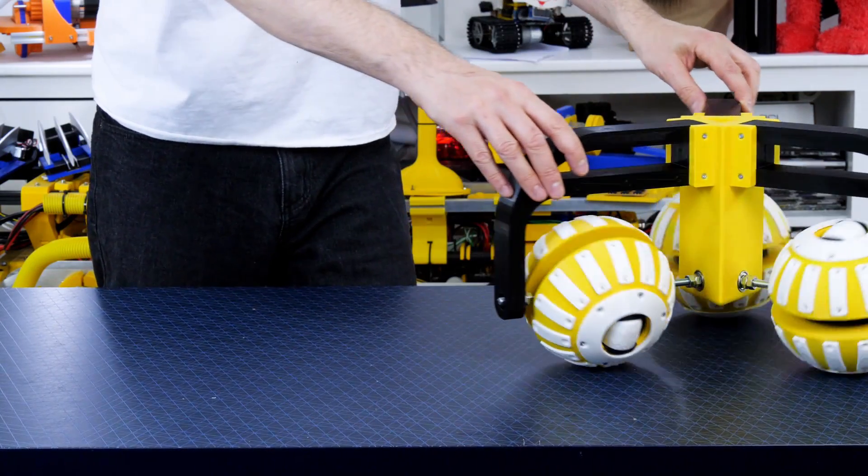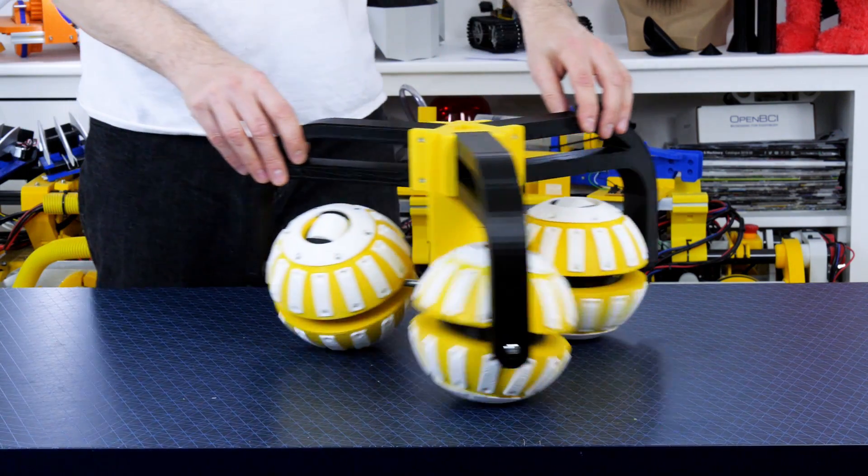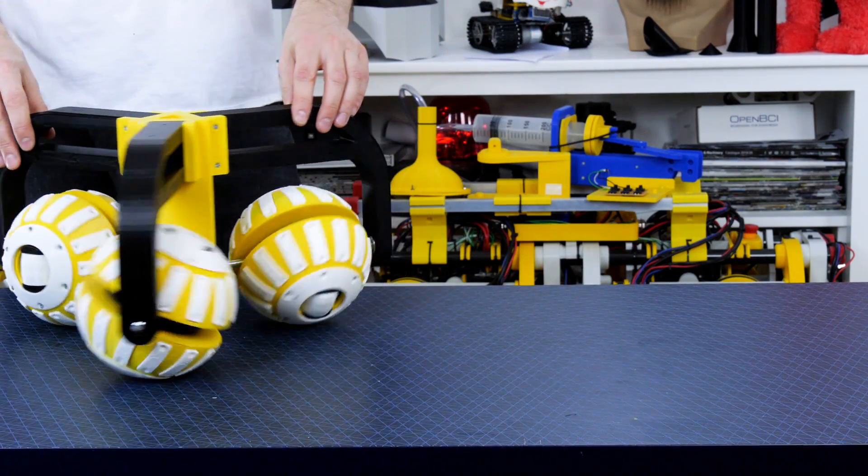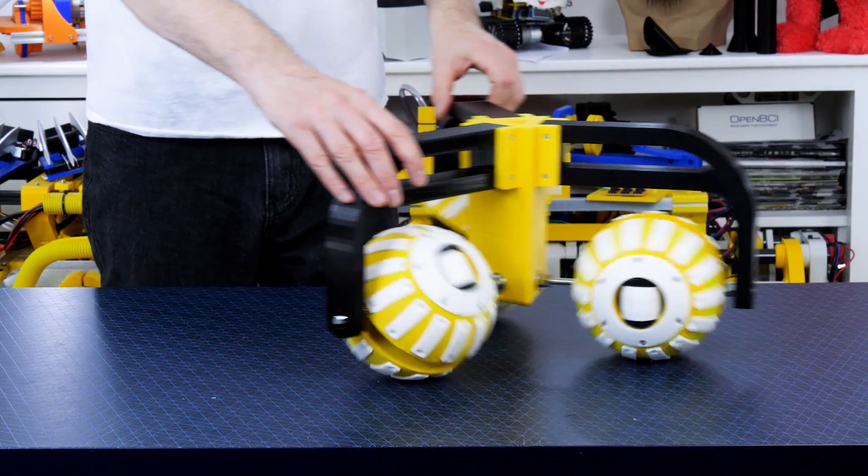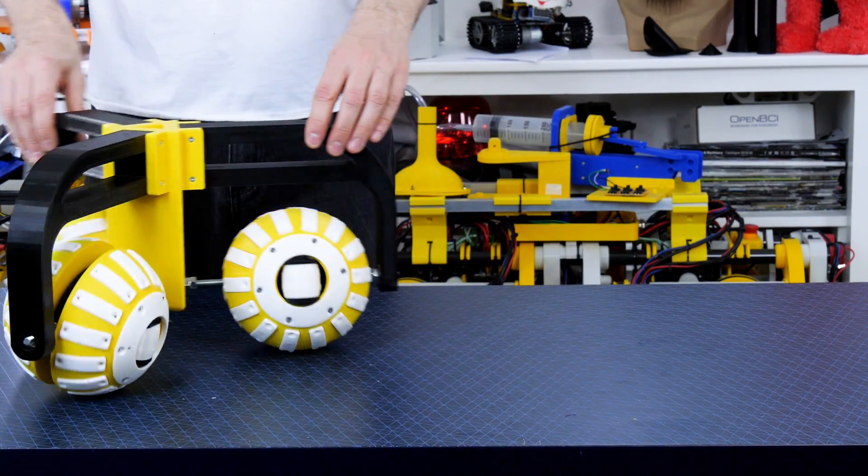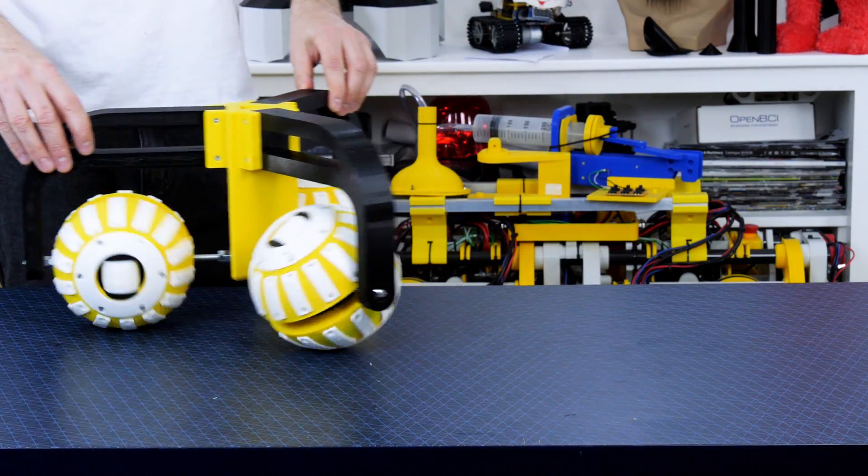It does feel like sometimes that TPU ring around the wheel is actually compressing and binding on that retaining clip, so we probably need to print that in something more rigid. But the probability of actually hitting it is pretty low when you drive with an omni robot. So that's one improvement to make but overall it just seems to glide around.